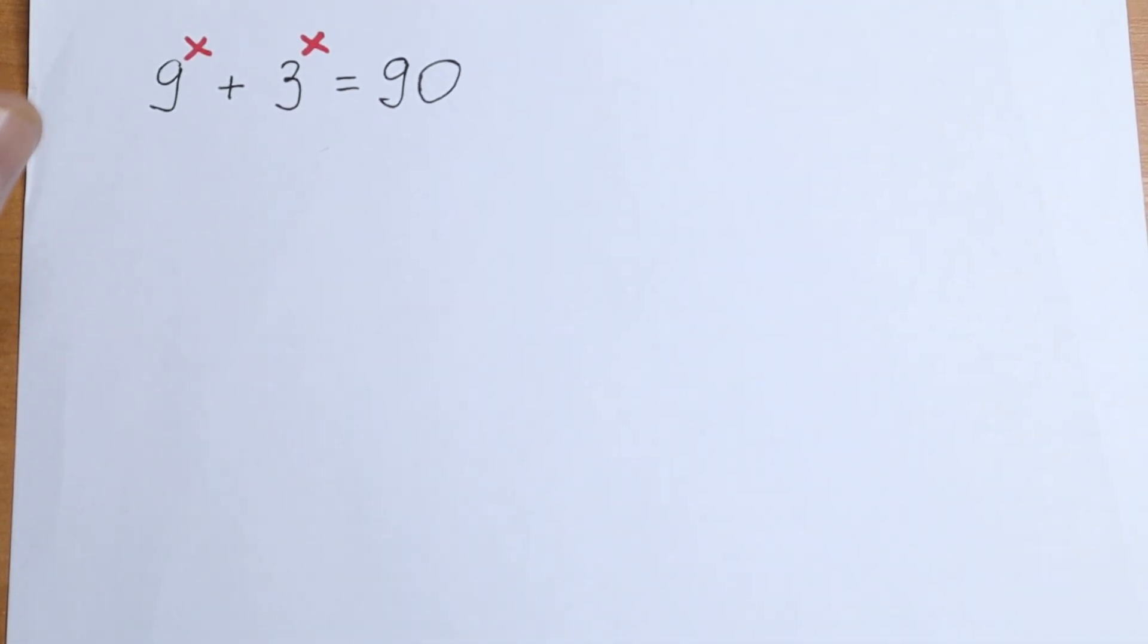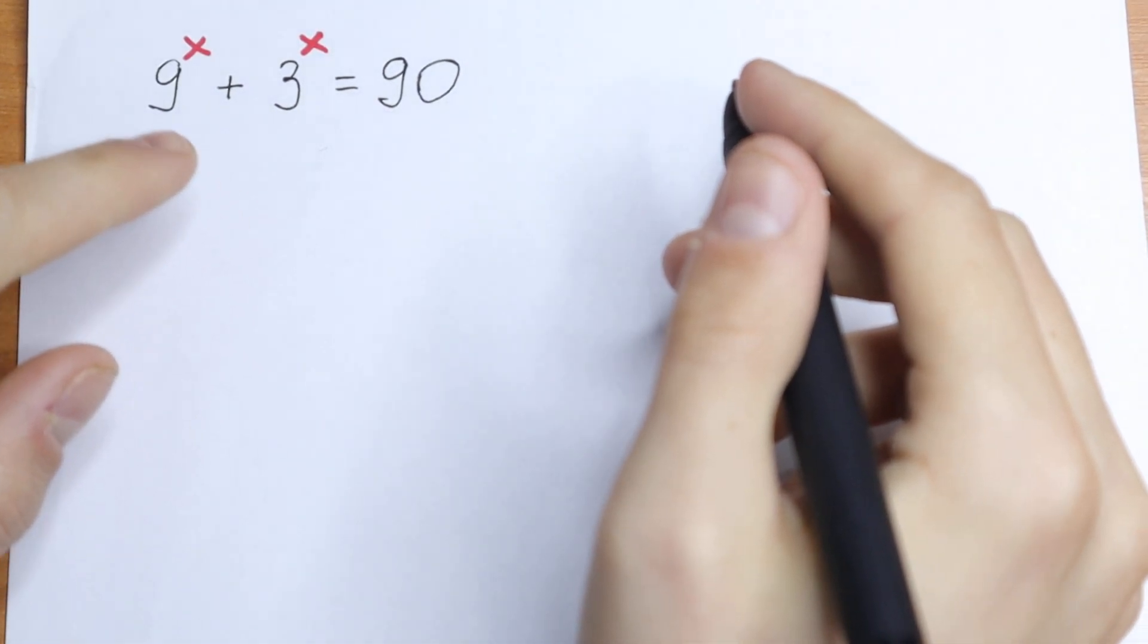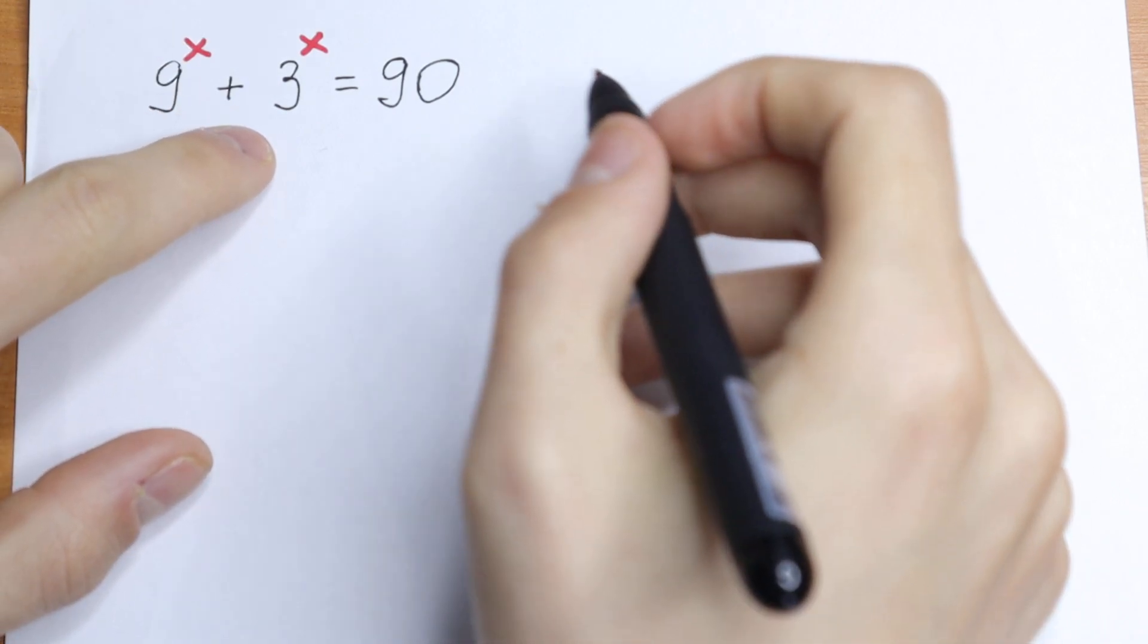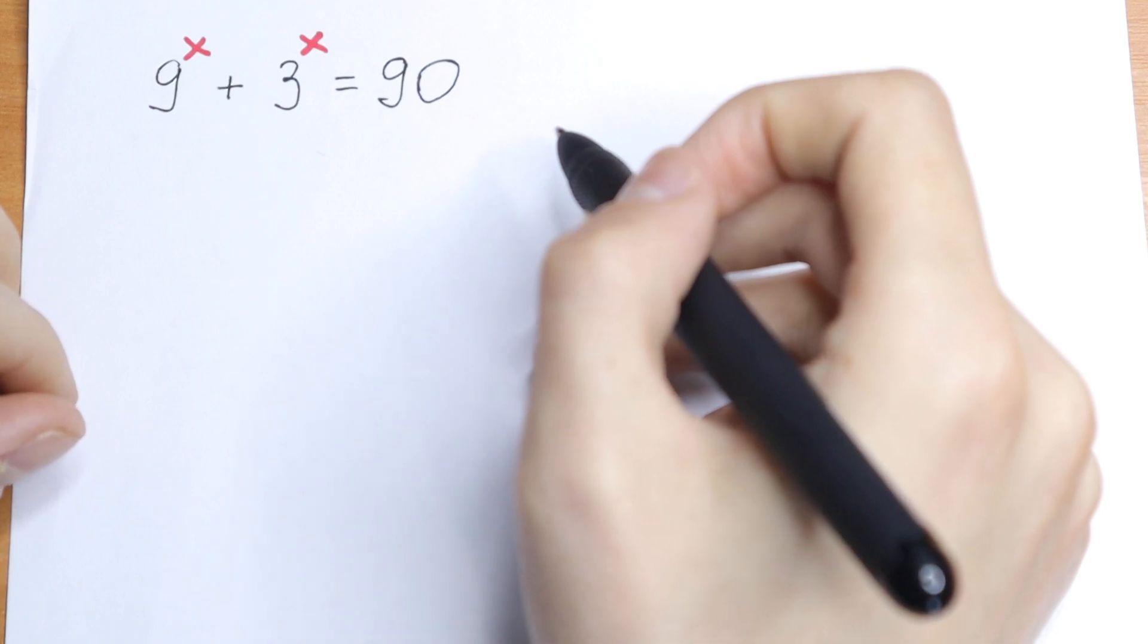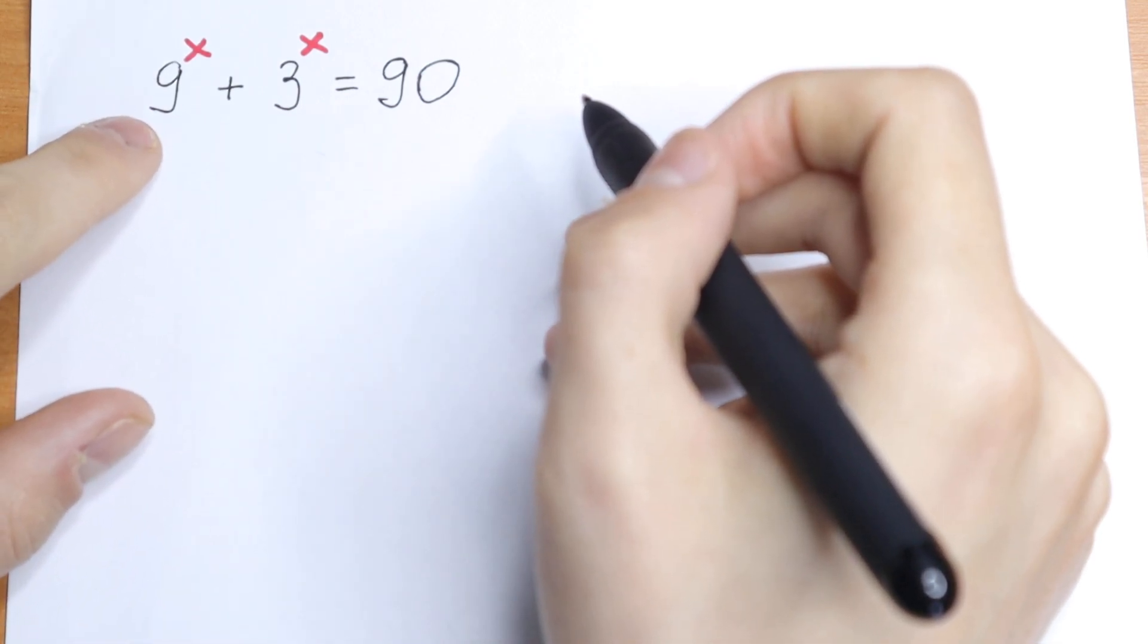Hello everyone! Welcome back to MathMove! Today we have an interesting exponential equation. We have 9 to the power x plus 3 to the power x equal to 90. How can you solve this equation? I want to suggest you a really good method how to solve this. Take a look.